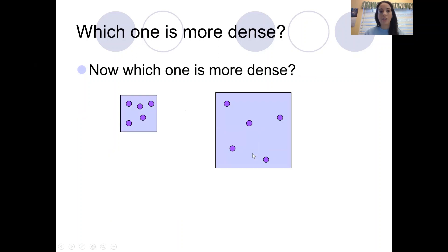Now let's look at this example. Now which one is more dense? Now they have the same amount of stuff, but this one is much bigger and this one is much smaller. This one is more dense because they're packed into a smaller space.